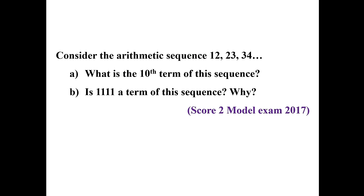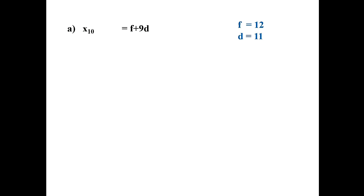Next question from model examination 2017 (score: 2): find the 10th term of the sequence, and determine whether 1111 is a term. The first term is 12 and the common difference is 11. The 10th term = 12 + 9 × 11 = 12 + 99 = 111.